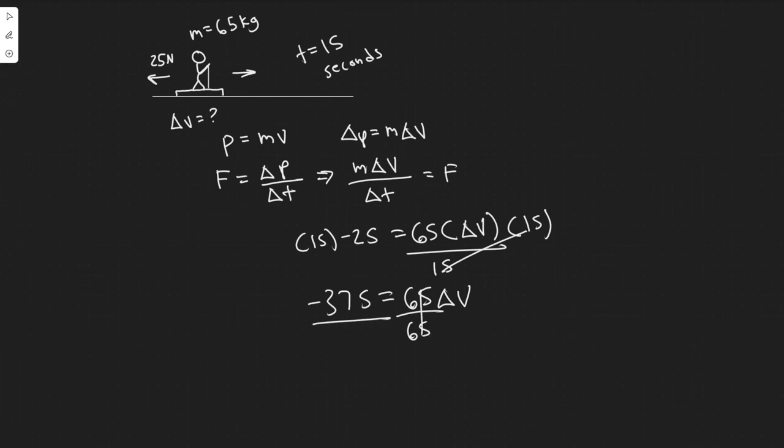Keep in mind the change in velocity is obviously negative because the force of friction is slowing us down. So our velocity is going to decrease. That's why we use the negative sign there.